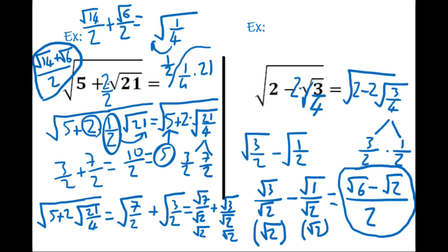This is the final answer. In a test, if this form doesn't appear in the options, look for equivalent forms — they are equal. I'm planning to finish the roots and radicals topic with one more video. I hope you liked it, thanks for watching, see you in the next video.